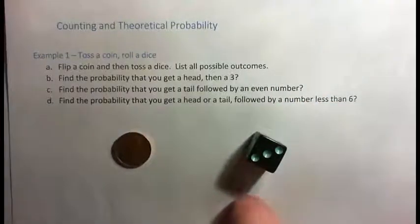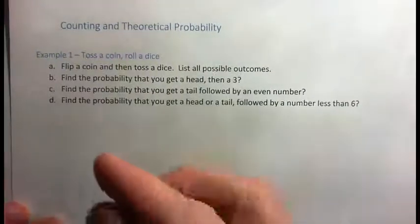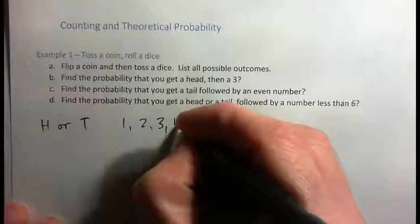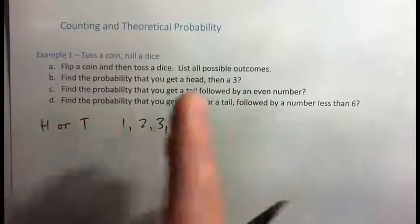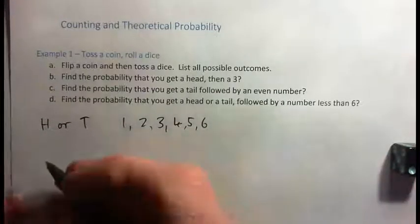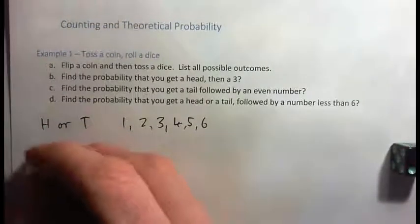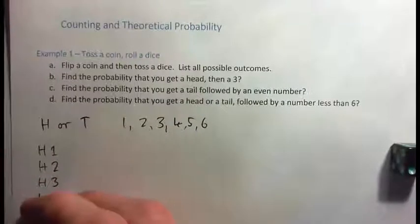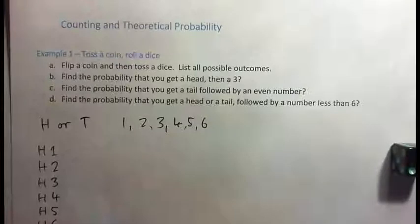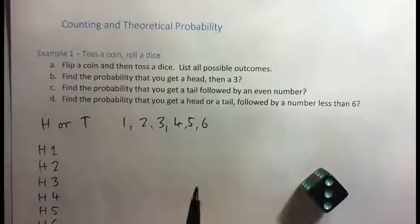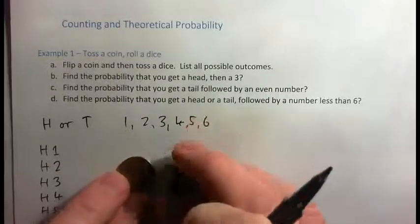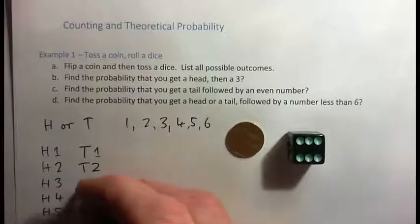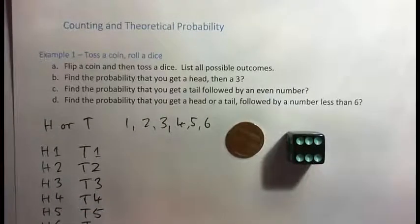So there are two events happening. From the coin you can get heads or tails, and from the dice you can get one, two, three, four, five, or six. Combining those events, the outcomes are: head with one, head with two, head with three, head with four, head with five, head with six — or tail with one, tail with two, tail with three, tail with four, tail with five, or tail with six.